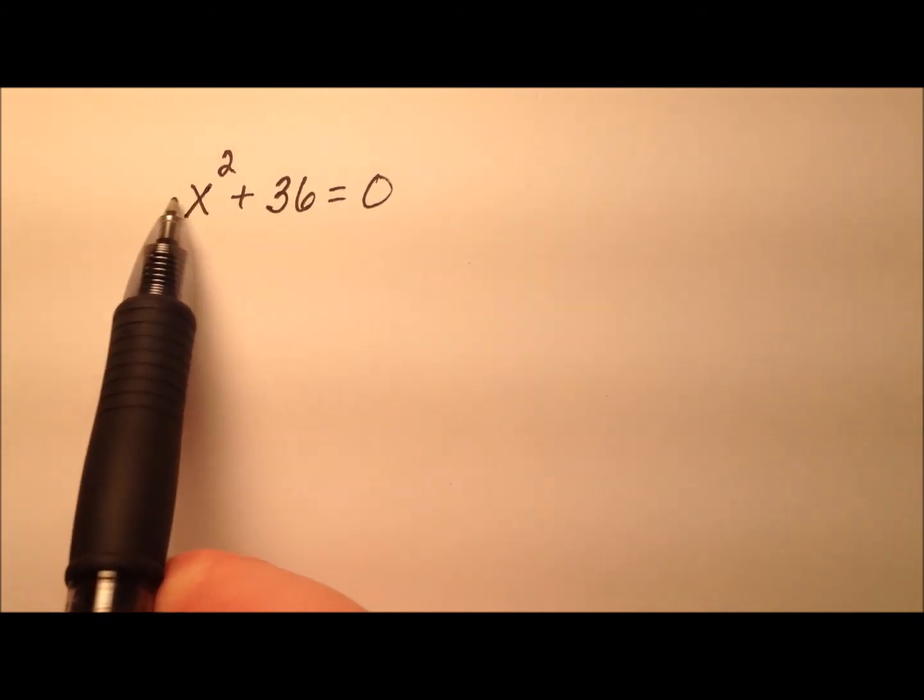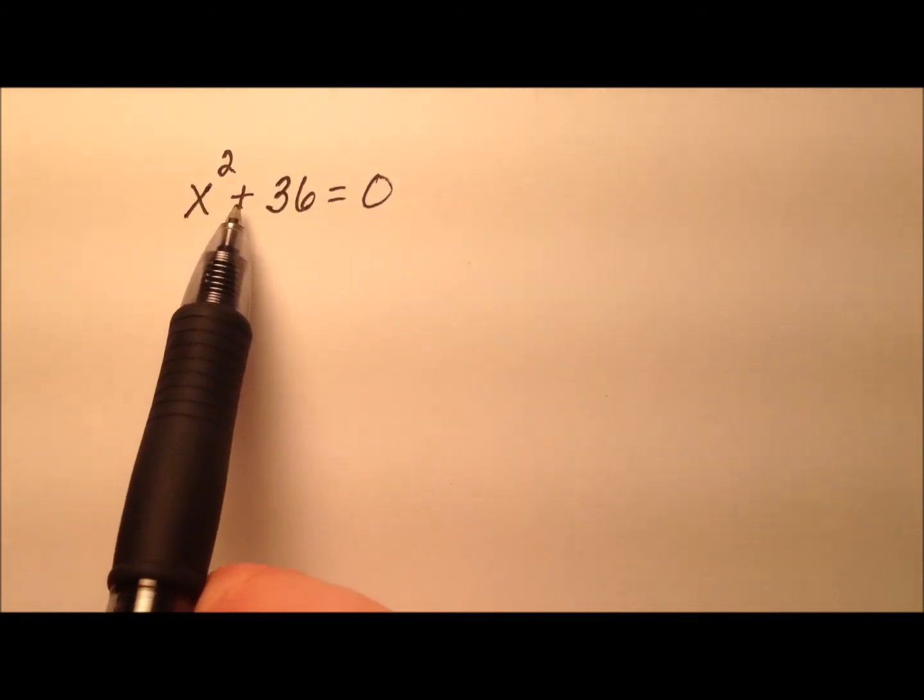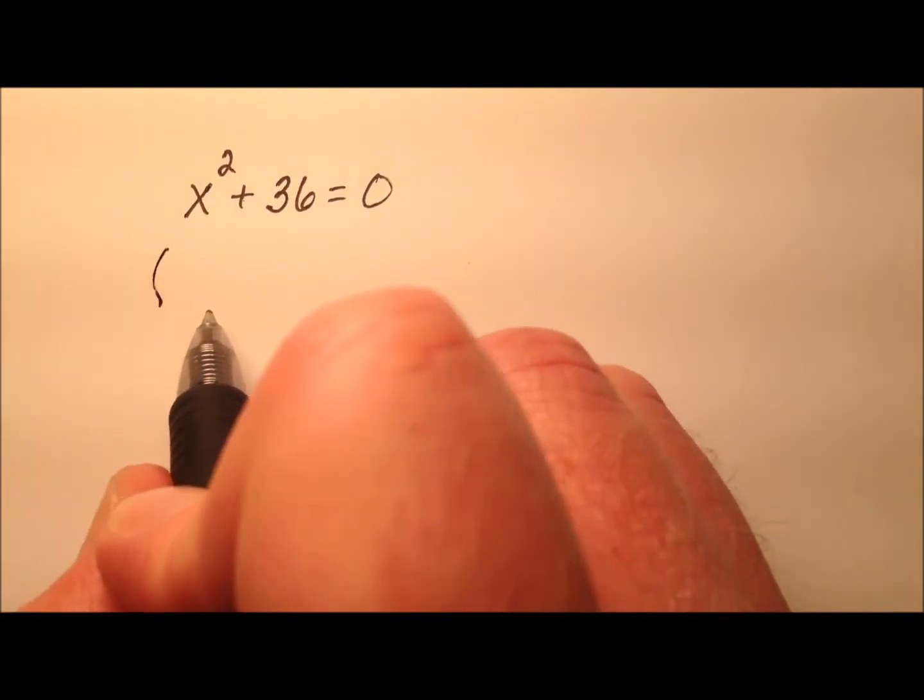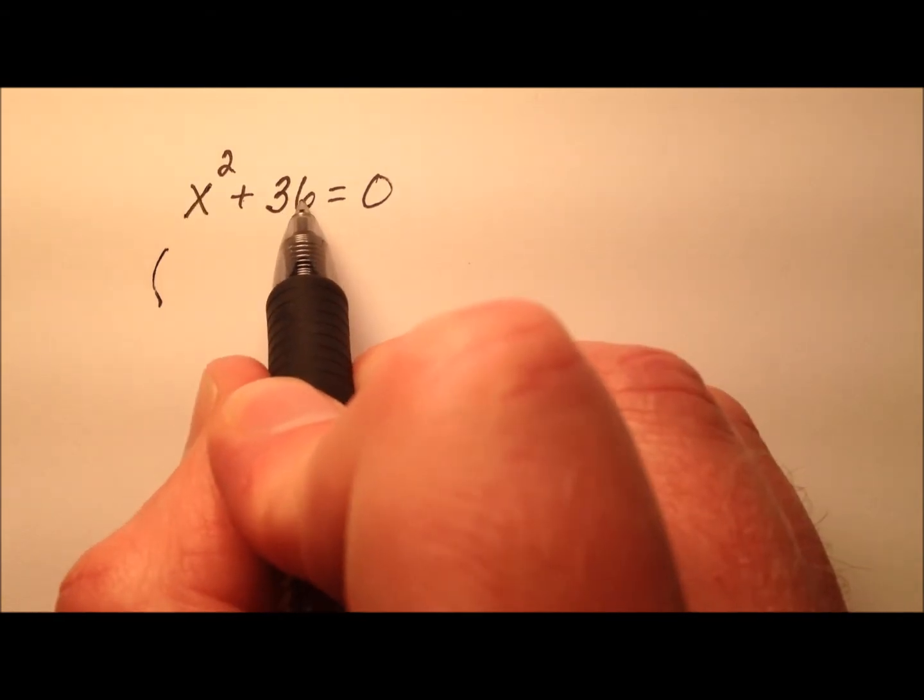Let's go ahead and factor this left side expression. It looks like I have the sum of two perfect squares. I know this will factor as the square root of the first one and the square root of the second one in a special sum of squares formula.